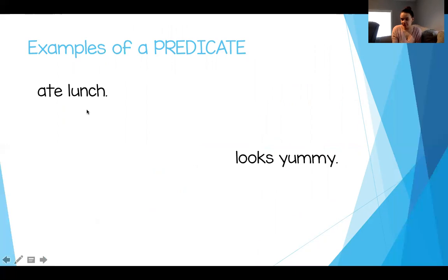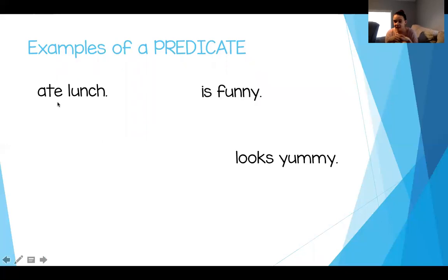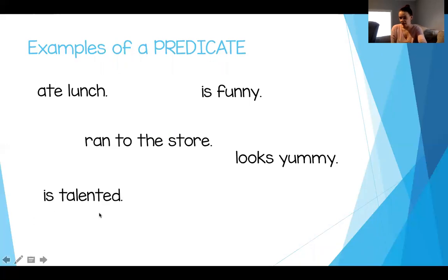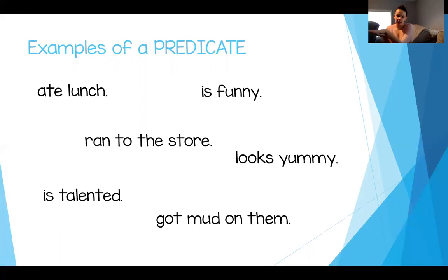Another predicate example: 'ate lunch' — that tells what somebody did. They ate lunch; it has a verb in it. The verb in that is 'ate.' Another predicate: 'is funny.' If you're talking about a person, you can say Miss Deacon is funny — it's April Fool's Day, after all; I was born on April Fool's Day. Another predicate: 'ran to the store' — Miss Deacon ran to the store to get some lunch. You're telling what that person did. This is a predicate because it has a verb and it tells you what's happening in the sentence. Other examples: 'is talented,' or 'got mud on them.' If I was talking about my shoes, my subject would be 'my shoes' and my predicate would be 'got mud on them' — it tells what happened to my shoes.